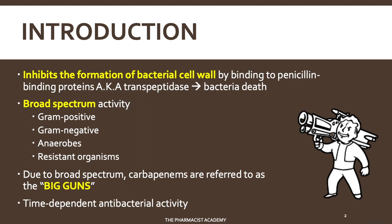Due to the broad spectrum, carbapenems are usually referred to as the big guns. Because it's the big guns, we don't want to just randomly use them — but when we need to use them, we don't hesitate. And once we find out exactly what organism or bacteria is causing the infection, that's when we de-escalate and use an agent that's more specific for that bacteria.